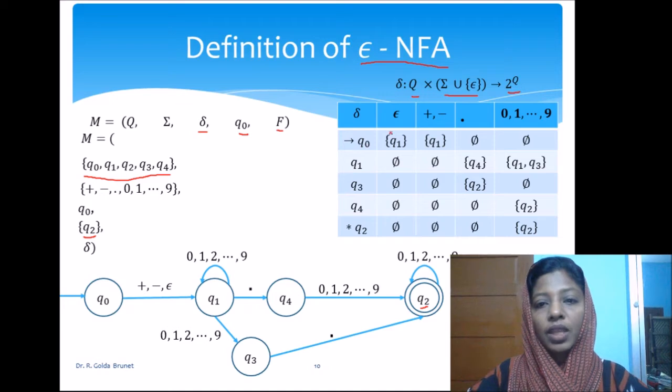From Q0 upon epsilon, we go to Q1 and for plus and minus we go to Q1. We are making these two symbols together in the same column because the behavior of the machine is the same for these two symbols.